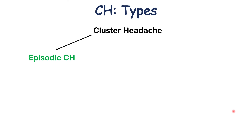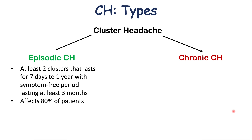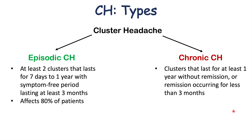Cluster headaches can be grouped into two types: episodic and chronic. Episodic cluster headaches involve at least two clusters lasting seven days to one year with a symptom-free period of at least three months — this is the more common type, affecting 80% of patients. Chronic cluster headaches last at least one year without remission, or with remission lasting less than three months.